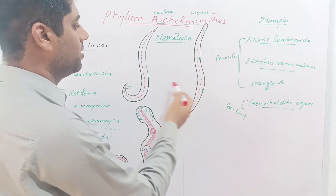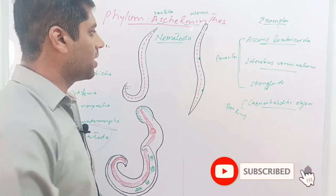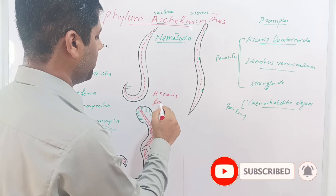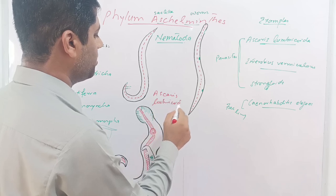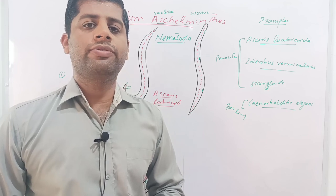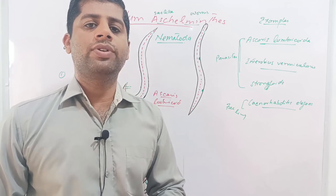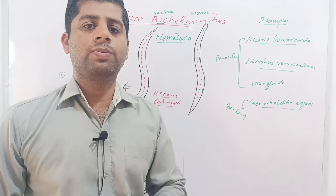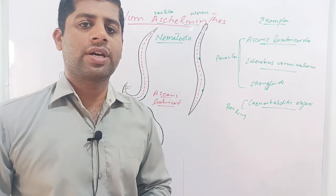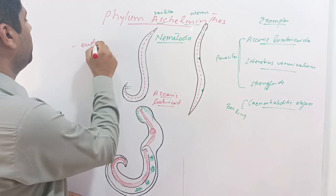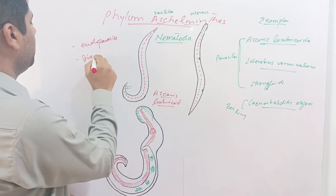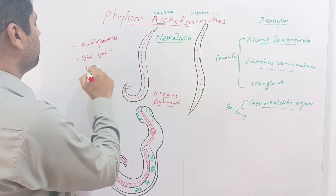First, Ascaris lumbricoides — these two diagrams show Ascaris lumbricoides. Ascaris lumbricoides are endoparasites of human beings and live in the intestines, specifically in the small intestine. They live freely in the lumen of the small intestine and are not attached to the wall of the intestine.